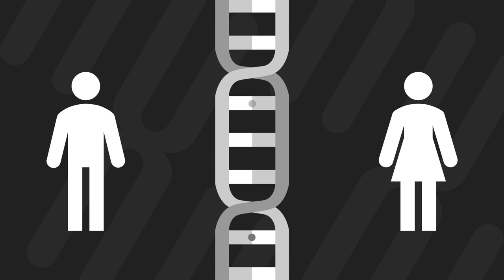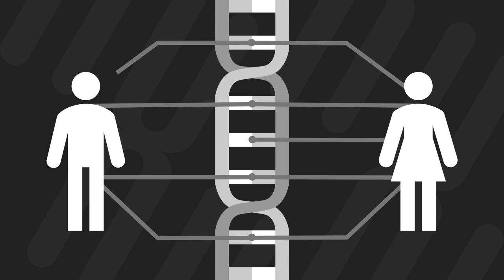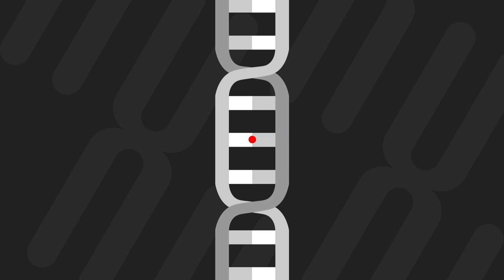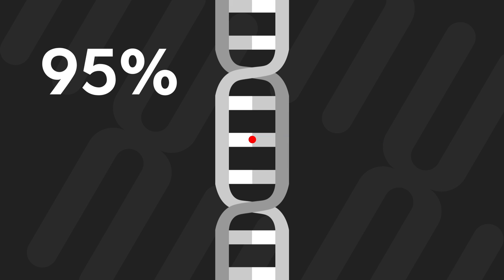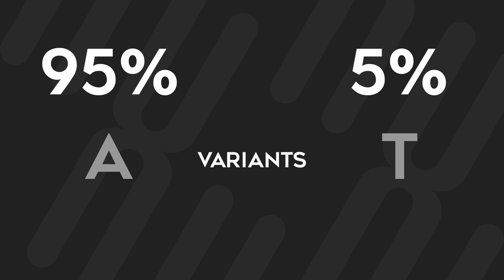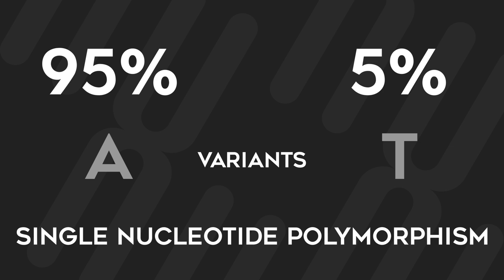Incredibly, humans share 99.9% of their genetic makeup, meaning only 0.1% of our entire DNA is responsible for the diversity we see between individuals. So, let's say we choose a spot along our DNA and find that 95% of people have an A nucleotide here, while the remaining 5% have a T nucleotide. Each of these forms is called a variant. Given that this location on human DNA can have multiple forms, it is dubbed a single nucleotide polymorphism, or a SNP for short.